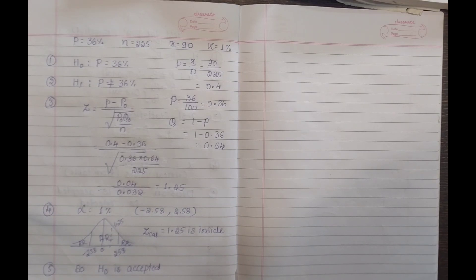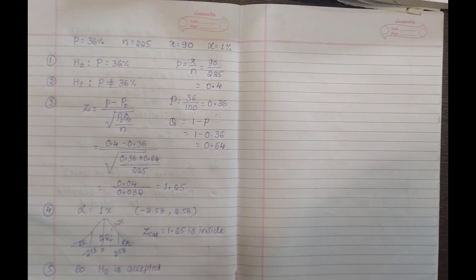The first test is for population mean. The second is a test for equality of population means — comparing two means. Third is population proportion and equality of proportion. This is a test for equality of proportion.